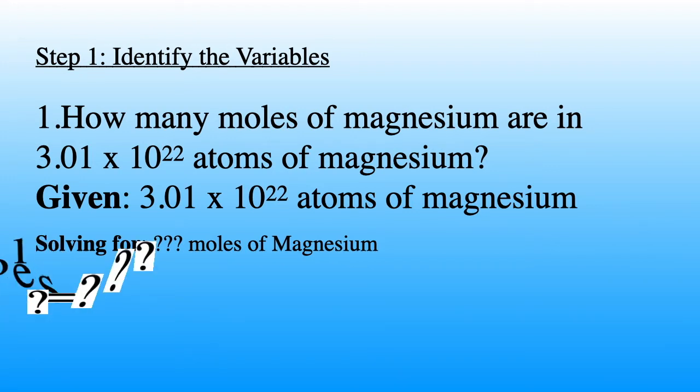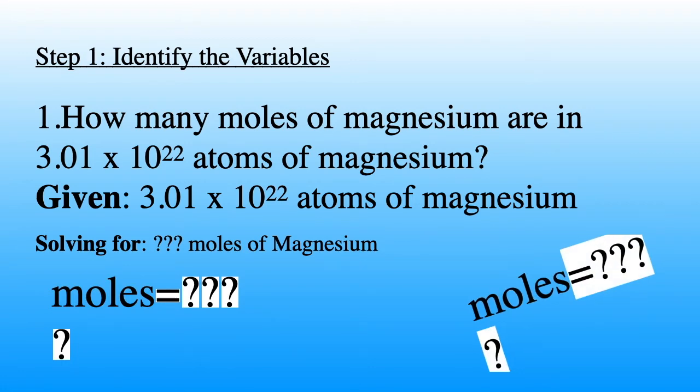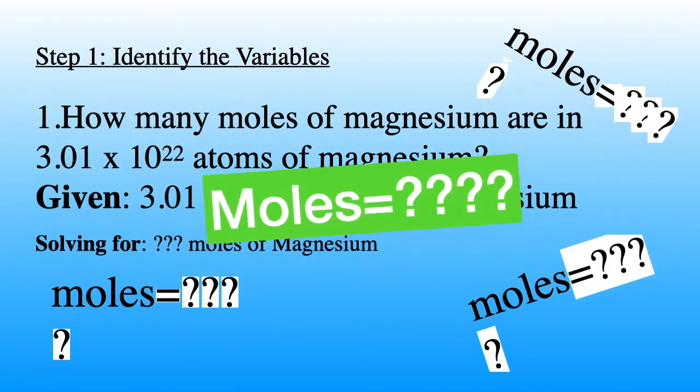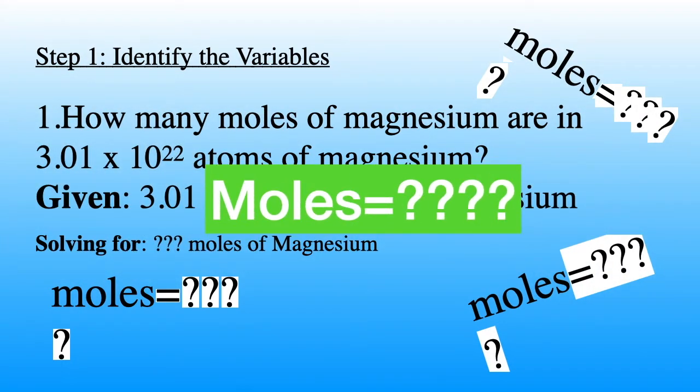As previously mentioned at the beginning of the video, make sure you wrote down the mole equalities that we will be applying to solve these problems. What we are solving for is moles of magnesium. So the big question here is, how do we convert atoms into moles? What do we do after identifying all the variables?